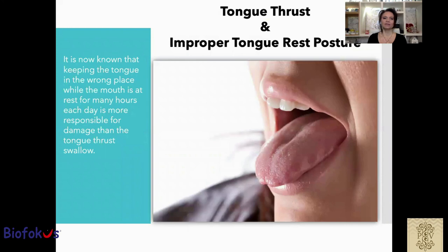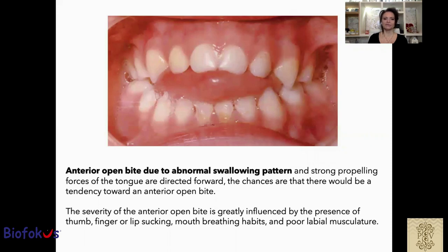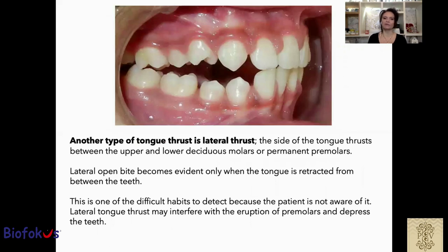It is now known that keeping the tongue in the wrong place while the mouth is at rest for many hours each day is more responsible for dental damage than tongue thrust swallowing. An anterior open bite due to abnormal swallowing pattern can force the tongue to direct forward and create an open bite. The severity of anterior open bite is greatly influenced by the presence of tongue, finger, or lip sucking habits, mouth breathing habits, and poor labial musculature. Another type of tongue thrust is lateral thrust. Lateral open bite becomes evident when the tongue is retracting from between the teeth — this is one of the most difficult habits to correct and detect because the patient is not aware of it. A lateral tongue thrust might interfere with eruption of premolars and depress the teeth.